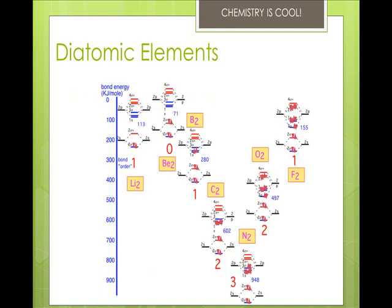There are eight elements that always form diatomic molecules: hydrogen, nitrogen, oxygen, fluorine, chlorine, bromine, iodine, and astatine.